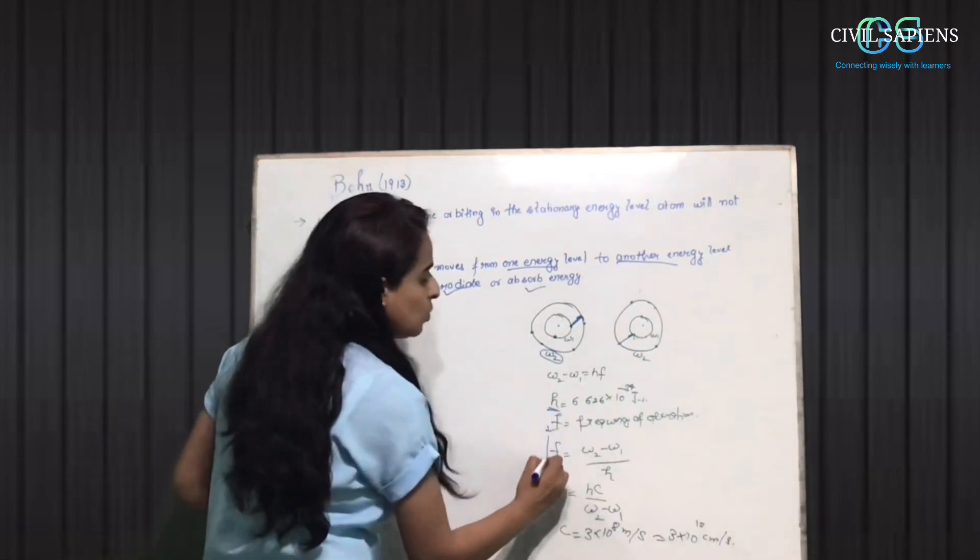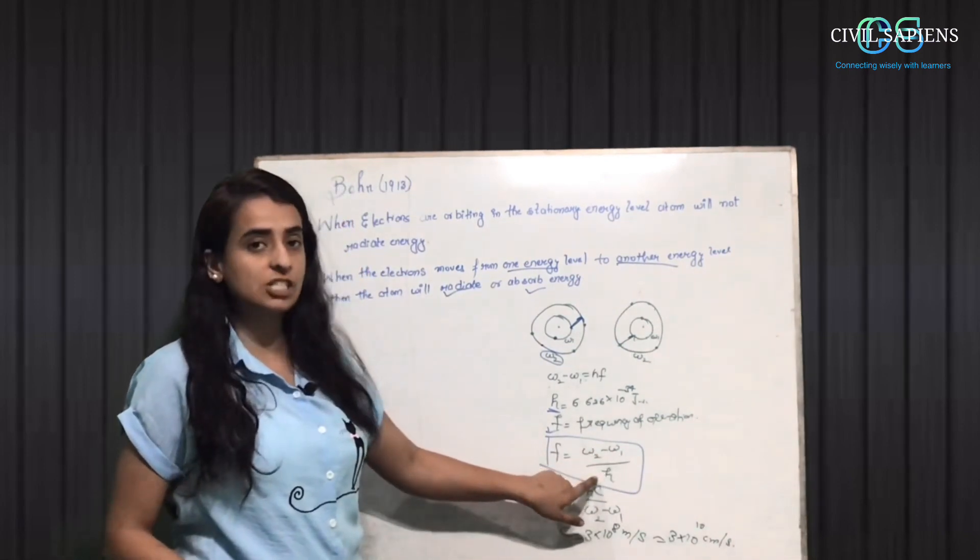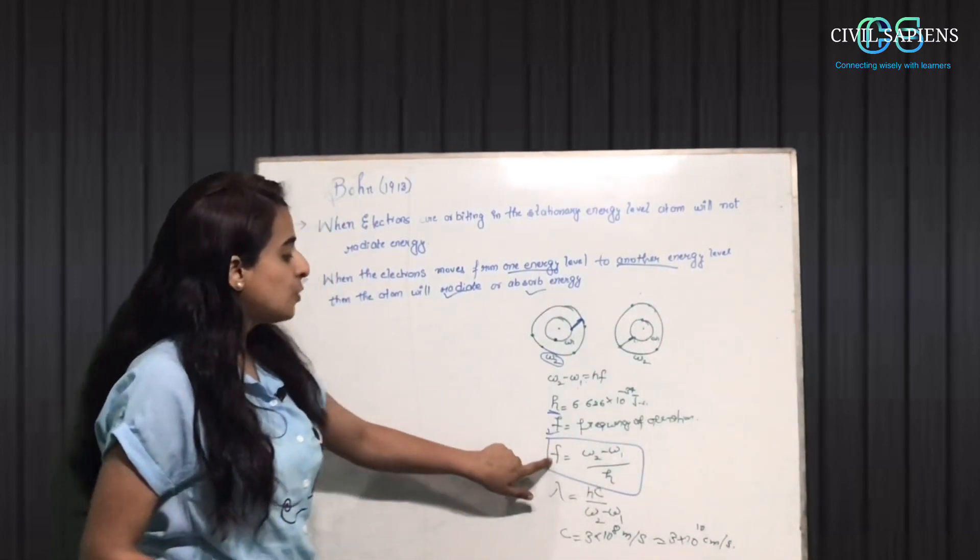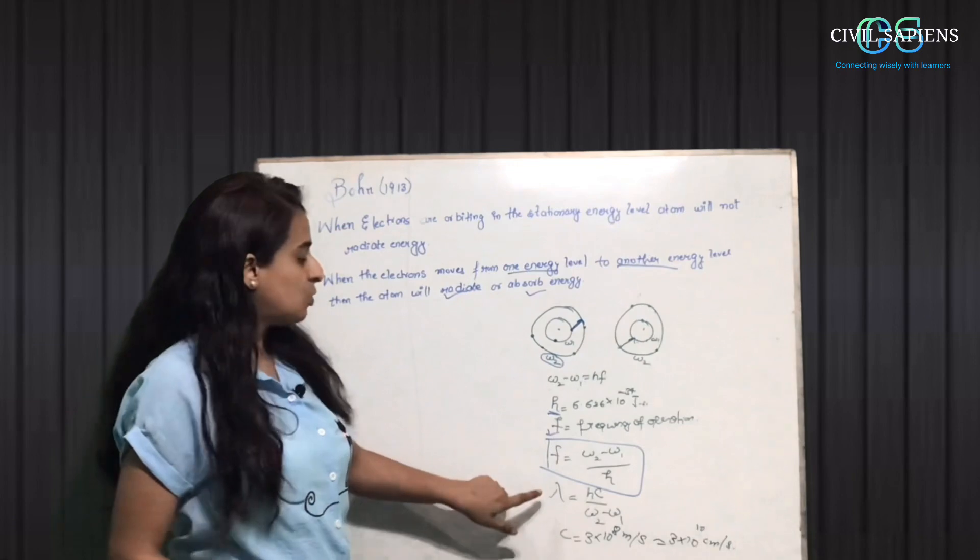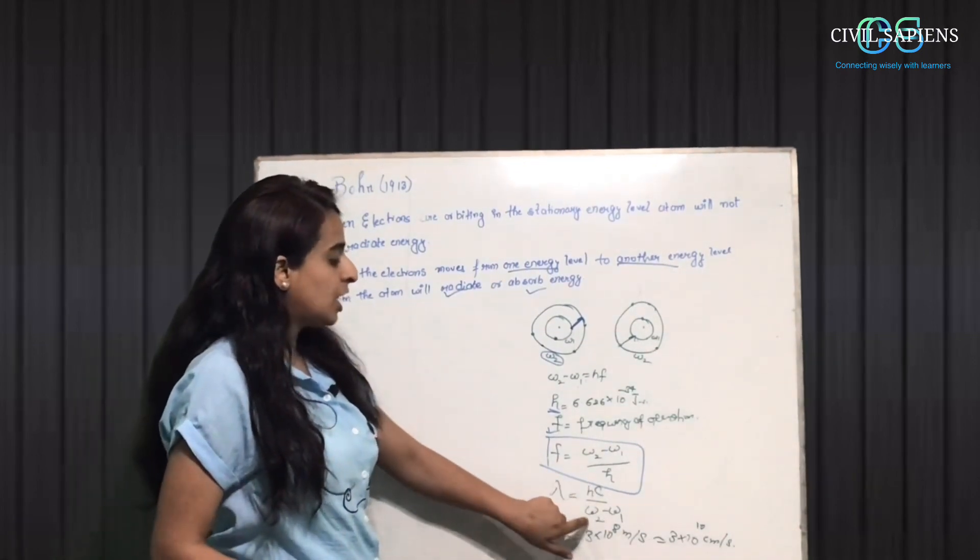If we find out the frequency here, what will happen? E2 minus E1 divided by h, that is the Planck's constant. So if we find the frequency, we can find the wavelength.